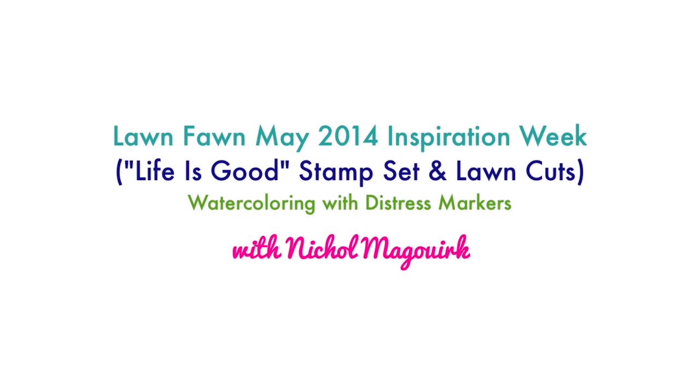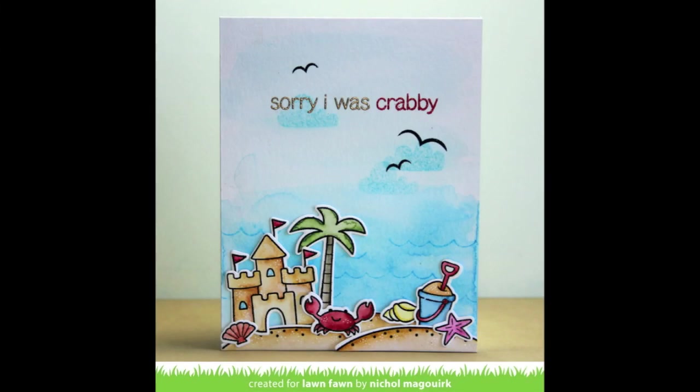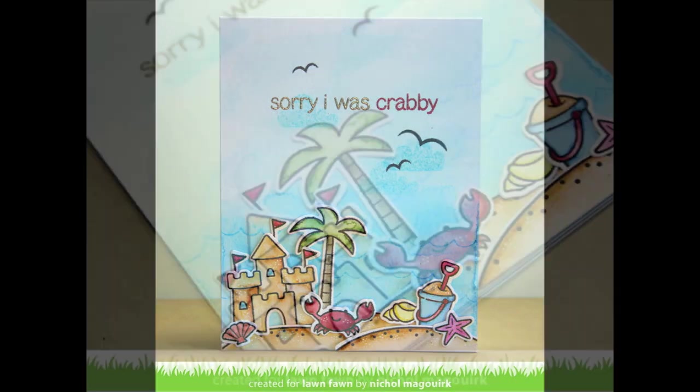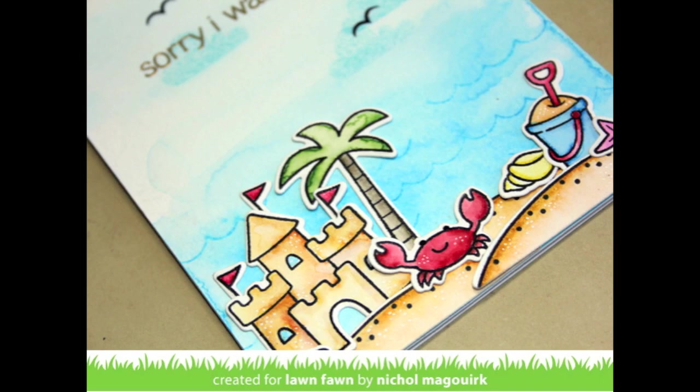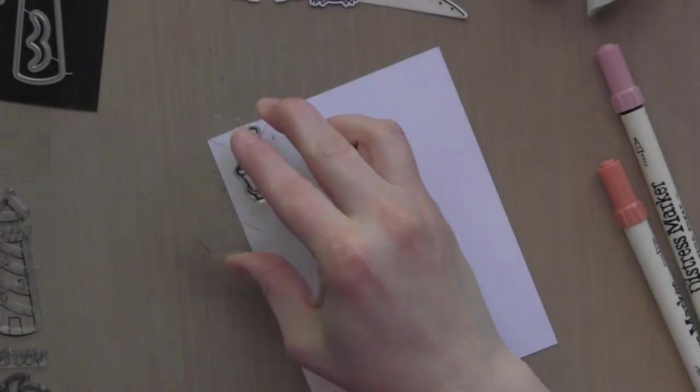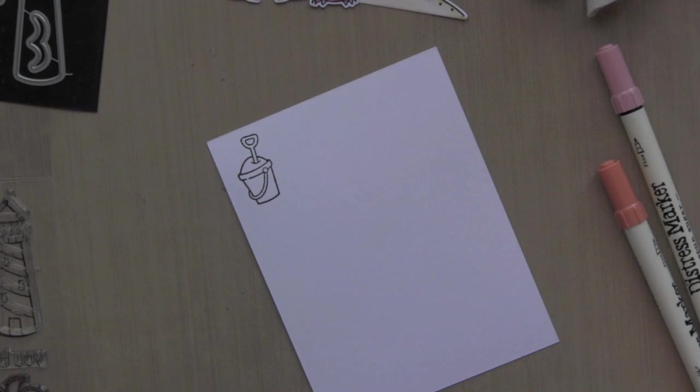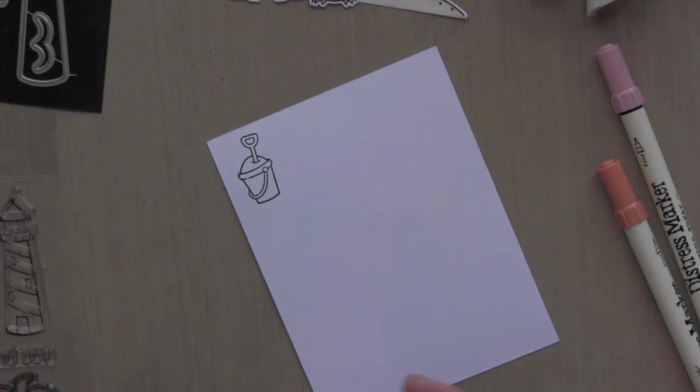Hi there, it's Nicole McCork and today for the Lawn Fawn May 2014 Inspiration Week, I'm focusing on the Life is Good stamp set and coordinating dies, which is this darling stamp set with all these beach themed images and the cute adorable little crab.